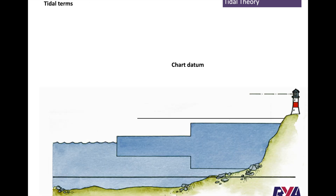Tidal terms: Chart datum is a very low level of tide and it's represented on the chart as where the sea meets the green area. The green on the chart is sometimes land, sometimes water, so it's set at a very low level. The tide level will go below chart datum — we'll do another video to explain that. Charted depth is any depth between chart datum and the seabed — so if it says 6 on the chart, that's 6 metres depth from chart datum to the bottom.